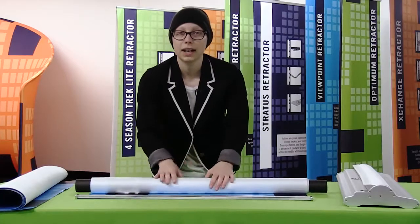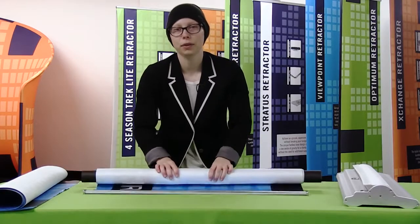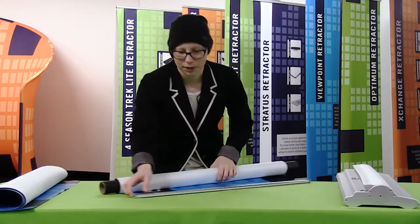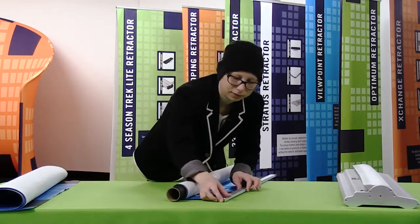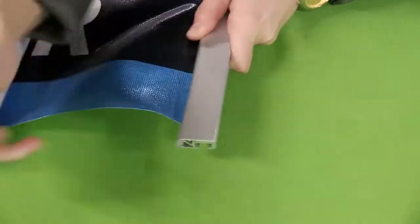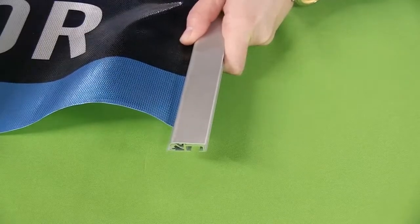Now that I have my graphic rolled, the next thing I'm going to do is remove the end caps of the top rail. They should easily just slide right off.